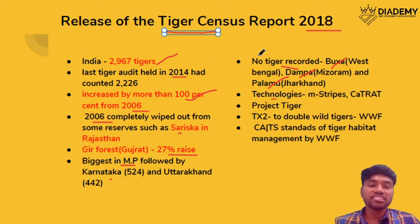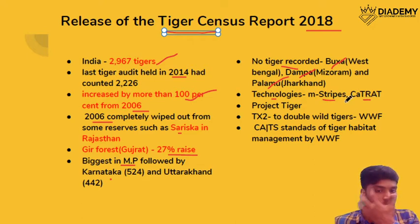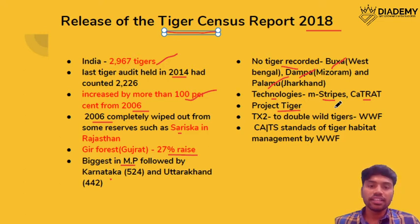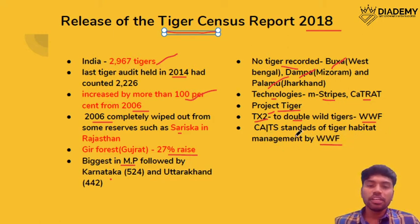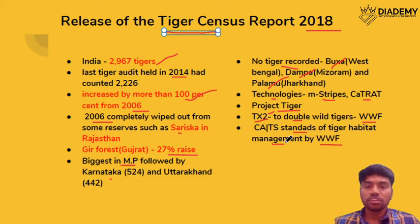Technologies used for this tiger census include M-strips, as seen earlier. There is also Project Tiger for conservation of tigers, which has its origin in the Wildlife Protection Act 1972. Another initiative by WWF is called TX2, aimed at doubling the wild tiger population. WWF also has a standard that evaluates how tiger habitat management is done by particular nations or governments.